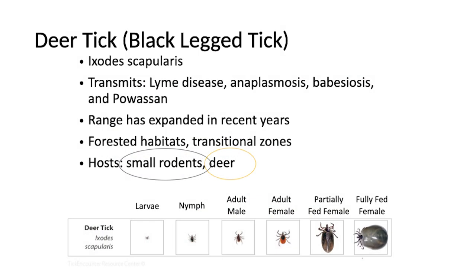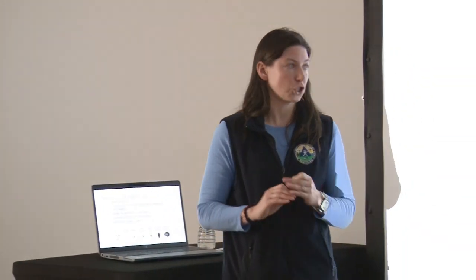Deer ticks love forested habitats. A lot of times you think about ticks and see a meadow with tall grass and think there must be a lot of ticks in there, but this particular tick does not like that type of habitat. You'll encounter them most along the sides of trails where there's a lot of leaf litter and low brush. They really like shaded environments — they are very susceptible to drying out, so they don't really like to be in direct sun or in heat. They like to be in the shade in leaf litter or vegetation where the moisture level is a little bit higher.